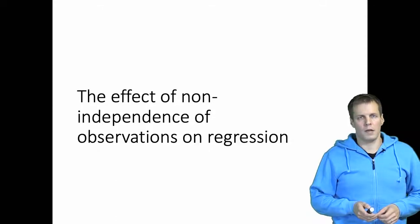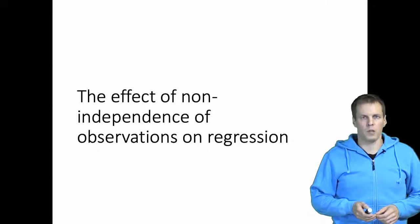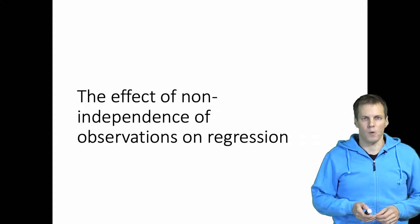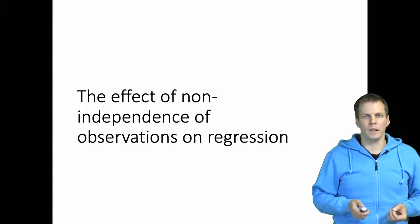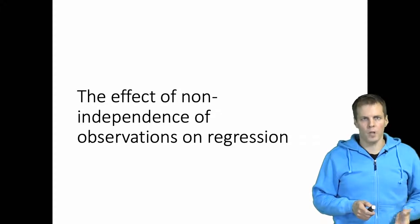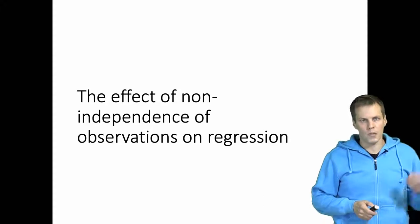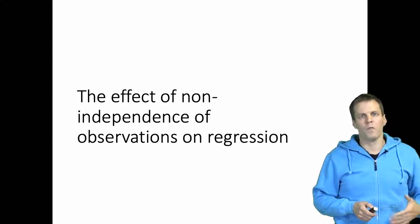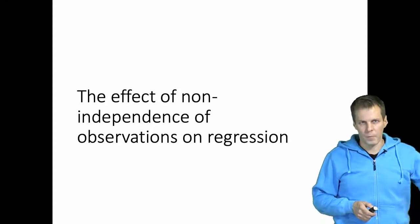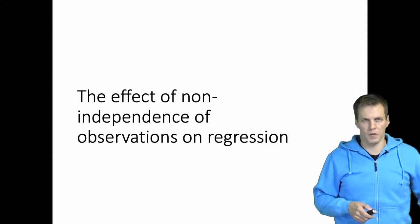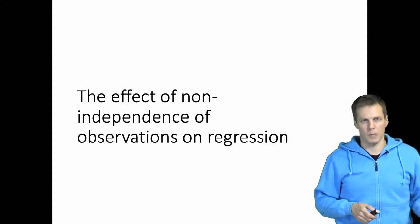Regression analysis assumes that the sample you're analyzing is a random sample from the population. That could be violated, for example, if you have 100 observations but those observations are measured from five different people, each of which is measured 20 times.